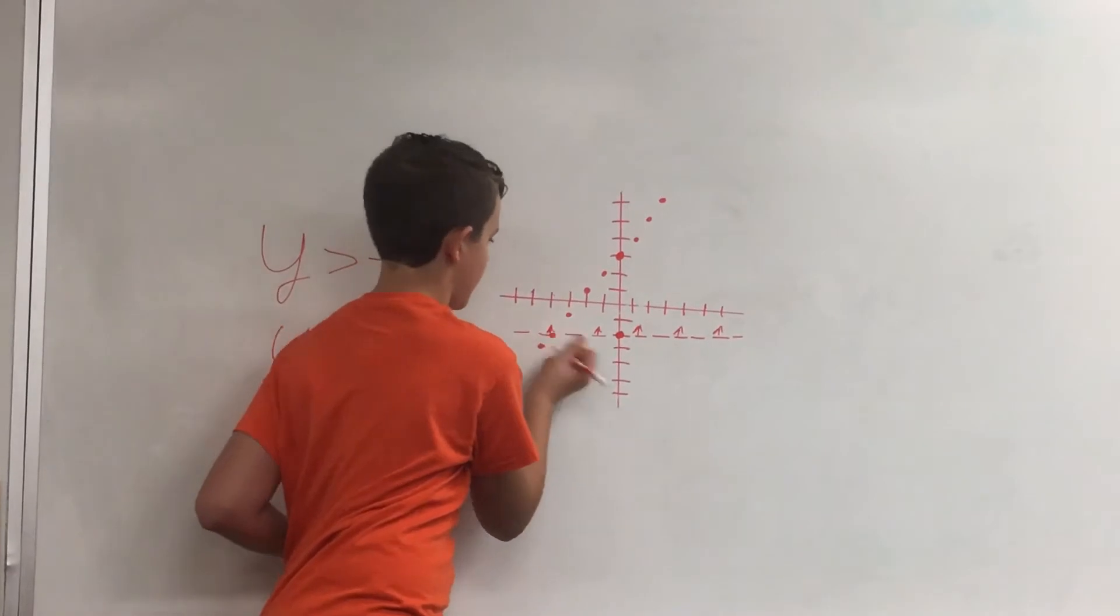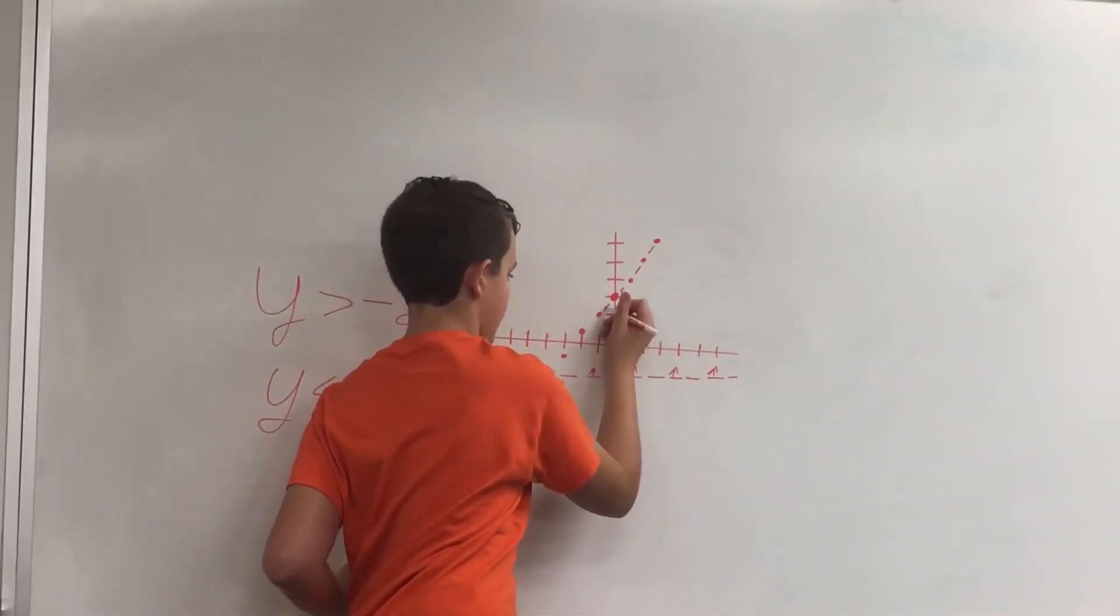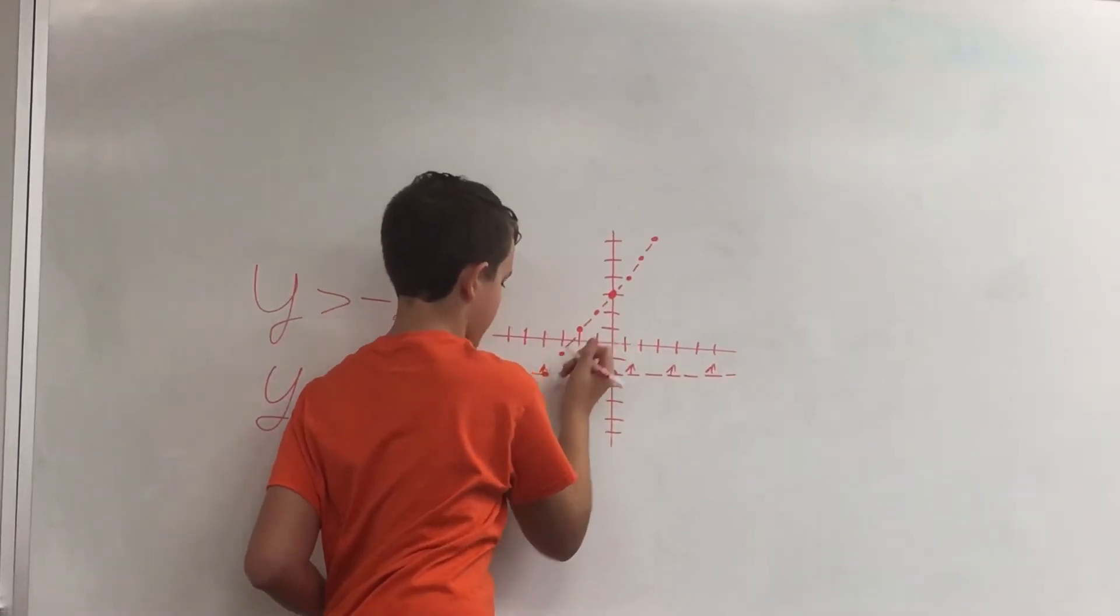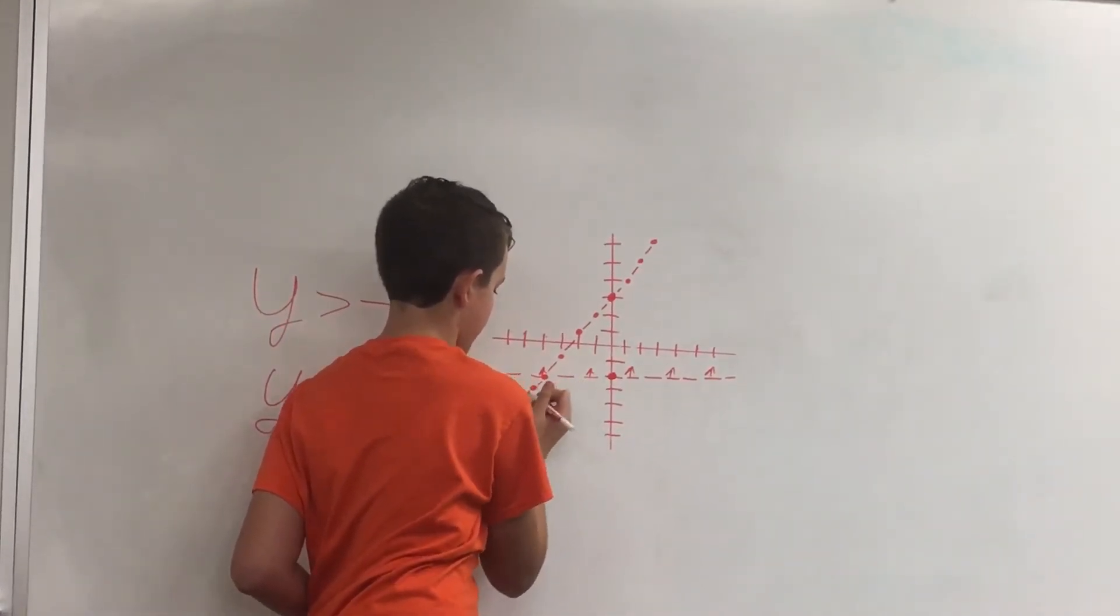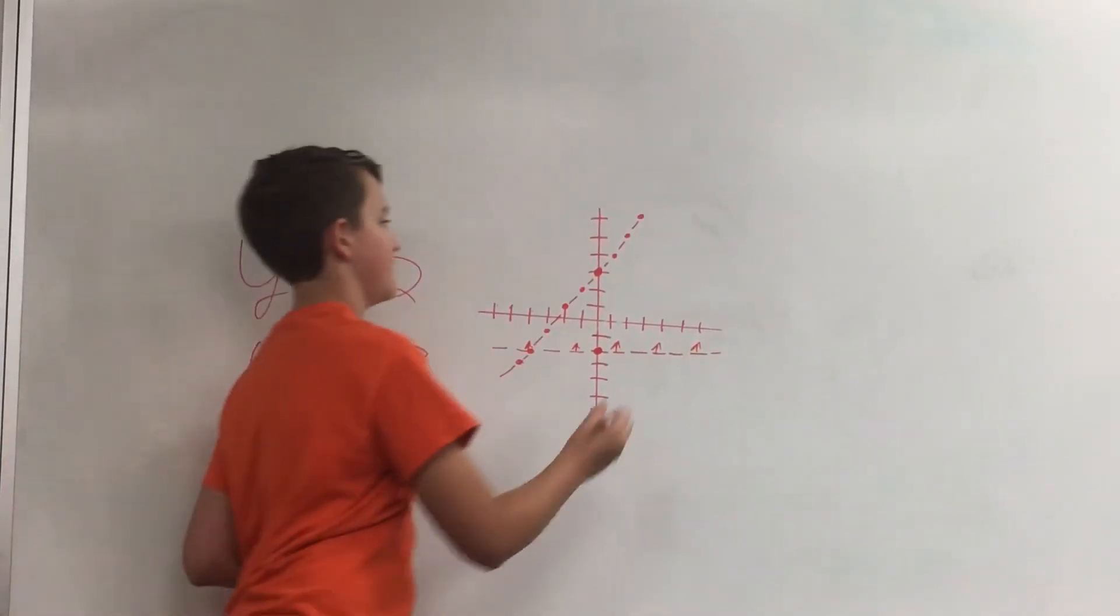It is a dotted line. Then you will plug in 0, 0. Is 0 greater than 3? No. So you have to shade downwards.